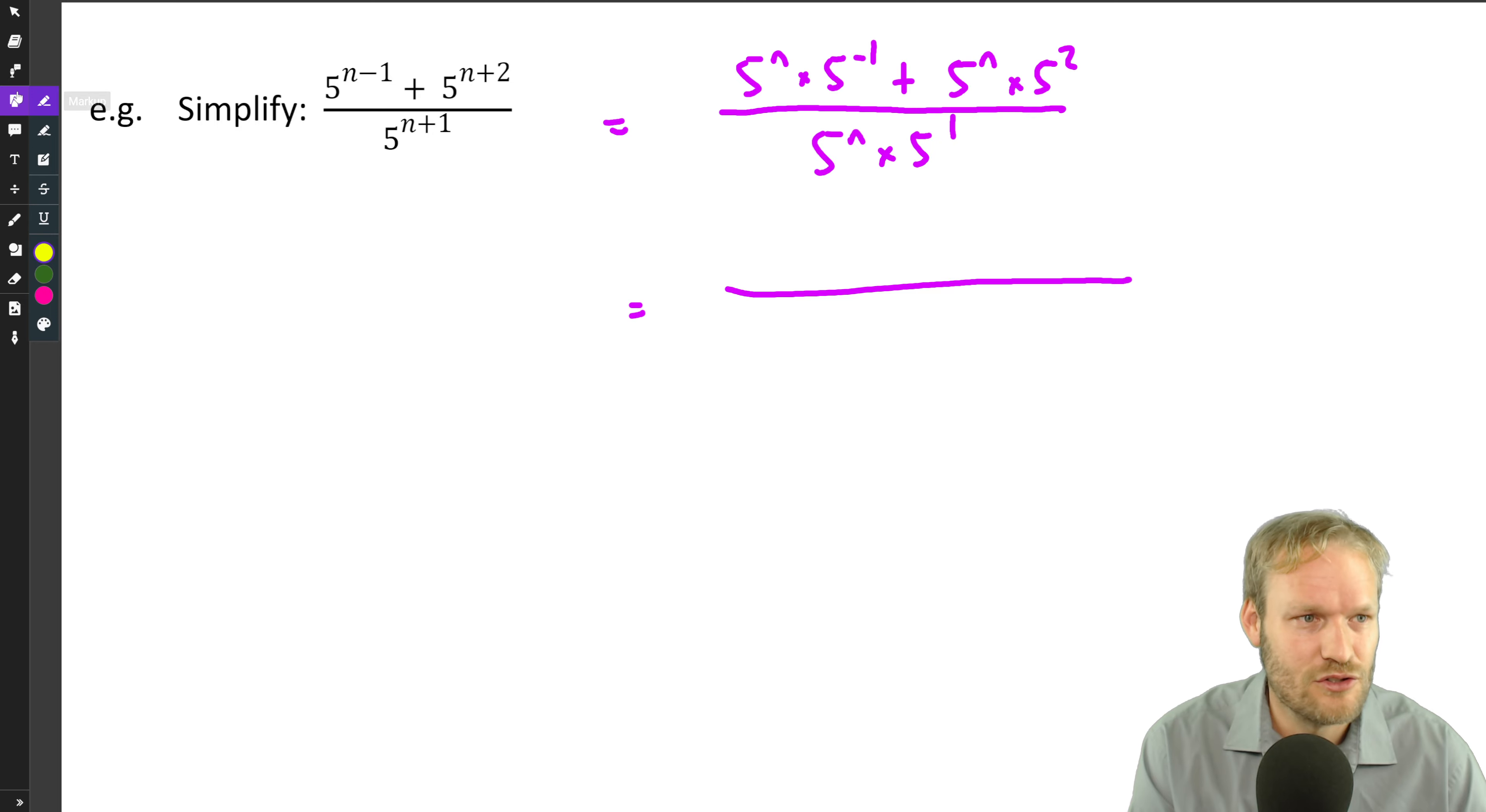If we look here, that's the one I want. We've got a 5 to the n there, and a 5 to the n. So we can take that out as a common factor. So let's take the 5 to the n out as a common factor. And by highlighting it, we can see what we still need to write in the brackets. There are two terms, so there must be two terms in the bracket. So if we multiply 5 to the n by 5 to the minus 1, we've got back to our first term. And our second term, we still need to multiply it by 5 squared.